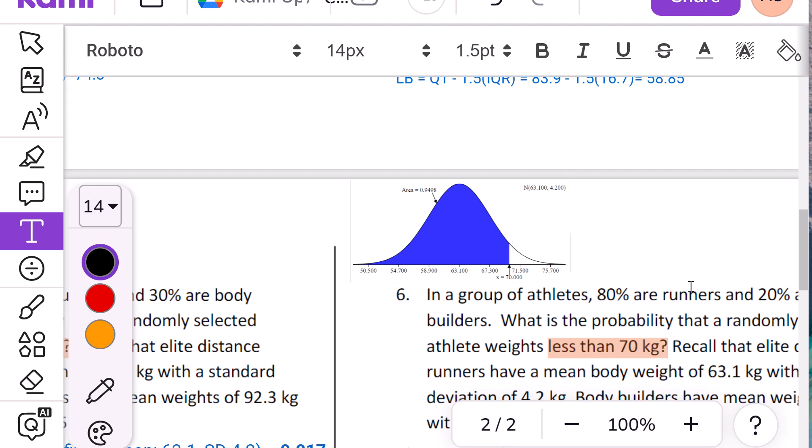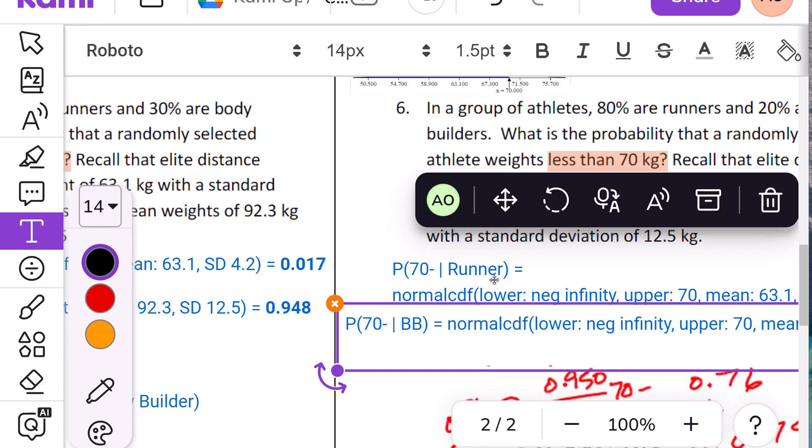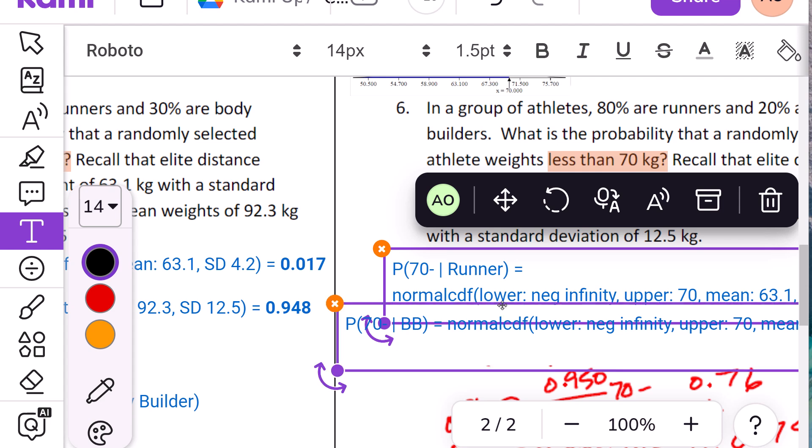So 80% are runners, 20% are bodybuilders. So that doesn't depend on their weight. That is just 80% are runners and 20% are bodybuilders. Now, guessing for weights is going to change drastically if they're a runner or a bodybuilder. So what is the probability that a randomly selected athlete weighs less than 70 kilograms? So what I do is the probability that a runner weighs less than 70 kilograms is I have to use the normal CDF to calculate that probability for runners.